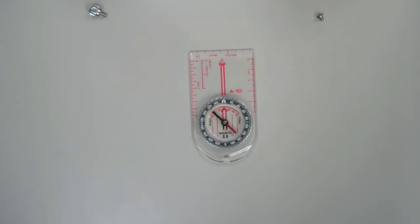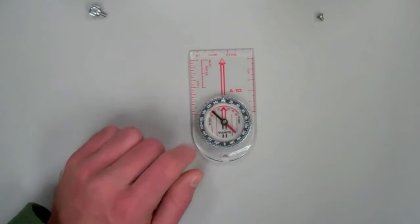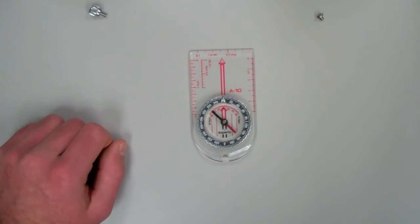The compass consists of a needle, one side red and one side black. The red side always points north, and the black side points in the opposite direction, which is south. The needle is surrounded by a dial which contains numbers going from 0 to 360. These are in degrees.